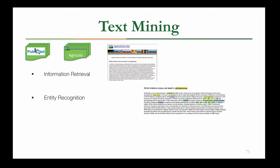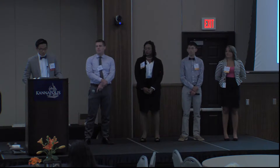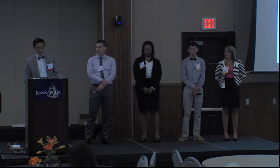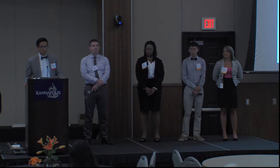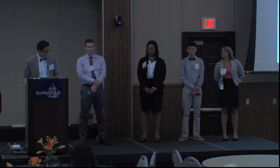The next step is entity recognition. It takes the list of documents returned from information retrieval and tags all the different entities — biomedical, agricultural — as well as the relationships connecting these entities within all the returned documents. The final step is information extraction, where we use Linguamatics, a text mining software, to put all the information into a computer-readable format so we can run computational tests on it. Now I'll hand it off to my interns to tell you how they helped this summer with graph theory and statistics.